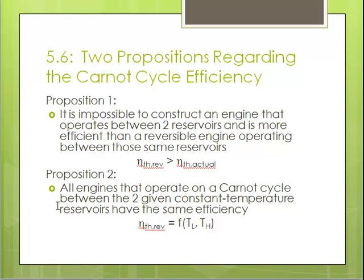The second proposition is that all engines operating on a Carnot cycle between two given constant temperature reservoirs — no matter how you implement it, whether with multiple steps or a Carnot cycle driving another Carnot cycle — will have the same efficiency. This means the efficiency is a function only of those two temperatures, the high and the low temperature.